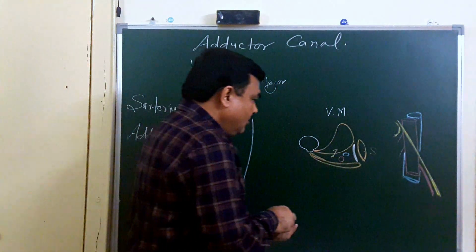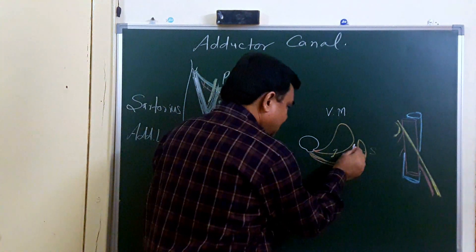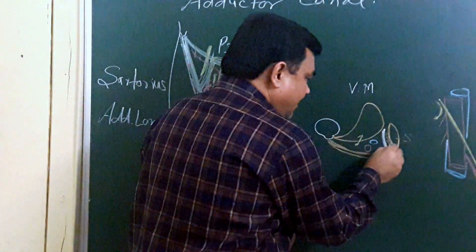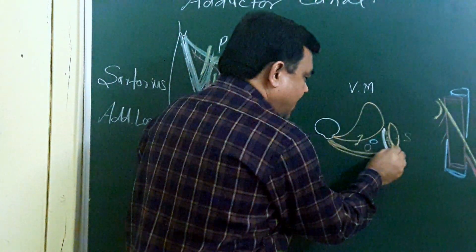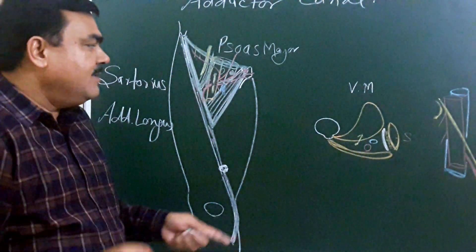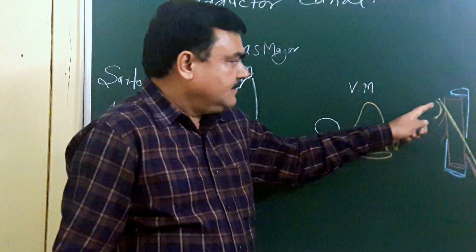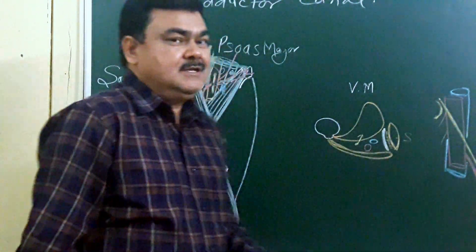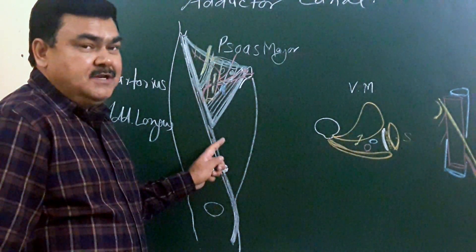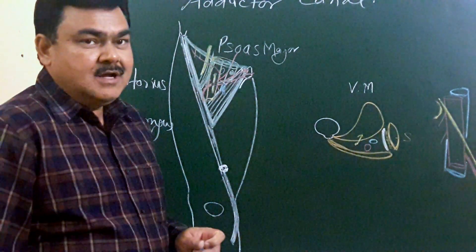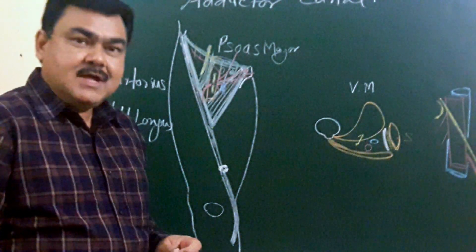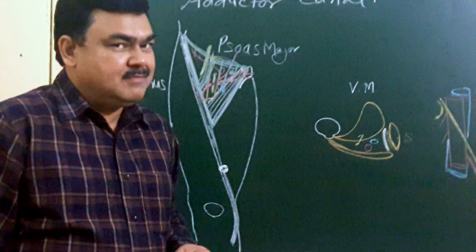Here is the subsartorial plexus. This plexus is formed by branches of the saphenous nerve, branches of the anterior and posterior divisions of the obturator nerve, and branches of the medial cutaneous nerve of the thigh.